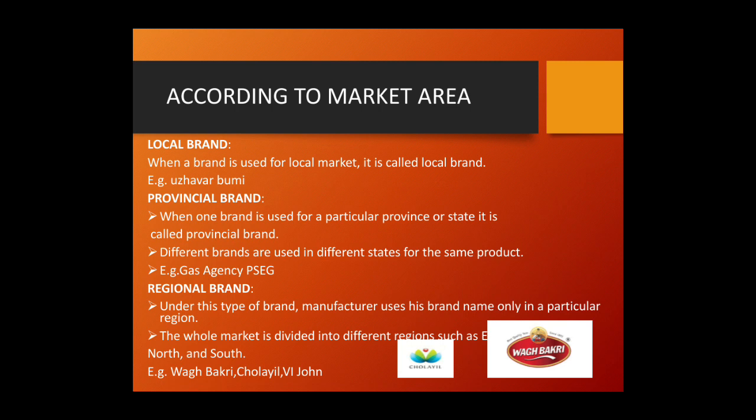When a brand is used only for the local market we call it a local brand. A typical example is Ulavar Bhumi, which caters to the local Chennai dairy needs — the company also provides milk, ghee and honey. A provincial brand is otherwise called a state-owned brand, where different brands are used in different states for the same product. An example is the gas agency in the respective states.